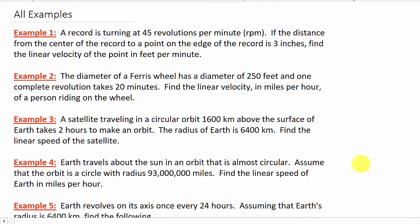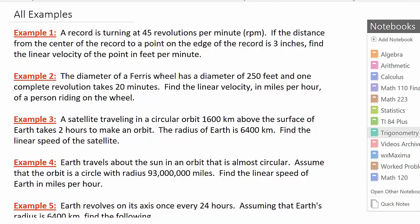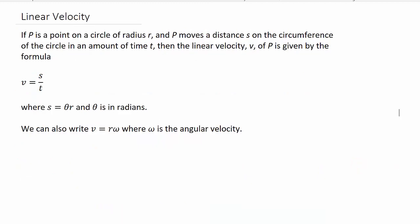But before we get into looking at the problems, let's look at linear velocity. It says if P is a point on a circle of radius R and P moves a distance S on the circumference of the circle in an amount of time T, then the linear velocity V of P is given by the formula V equals S over T.